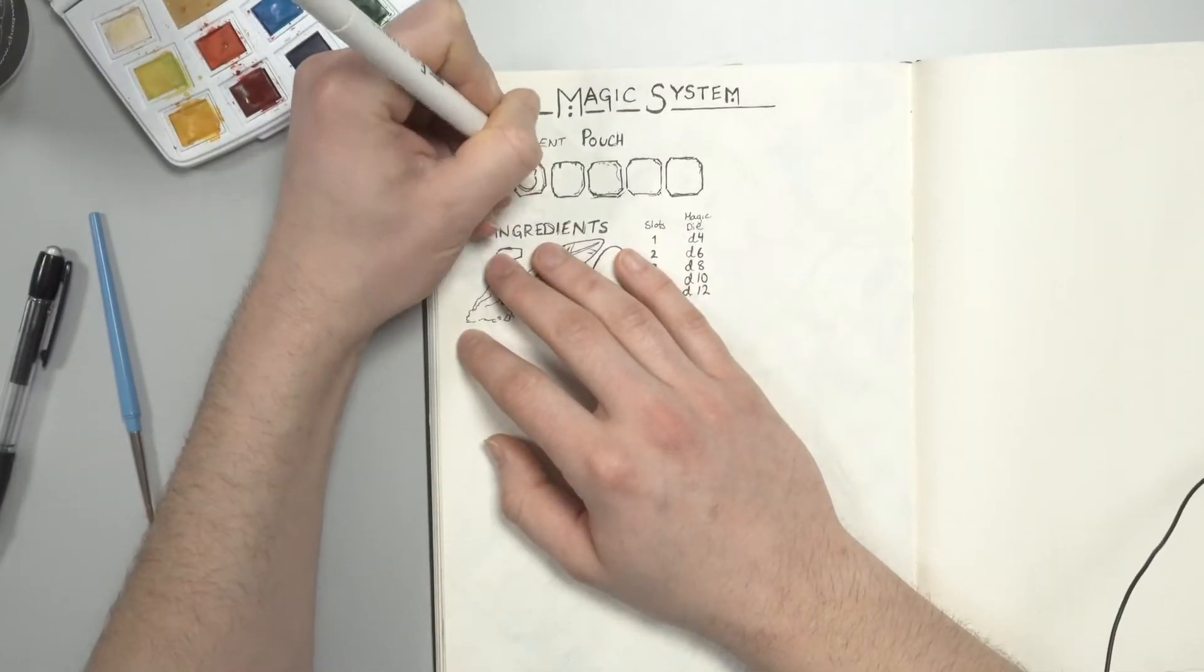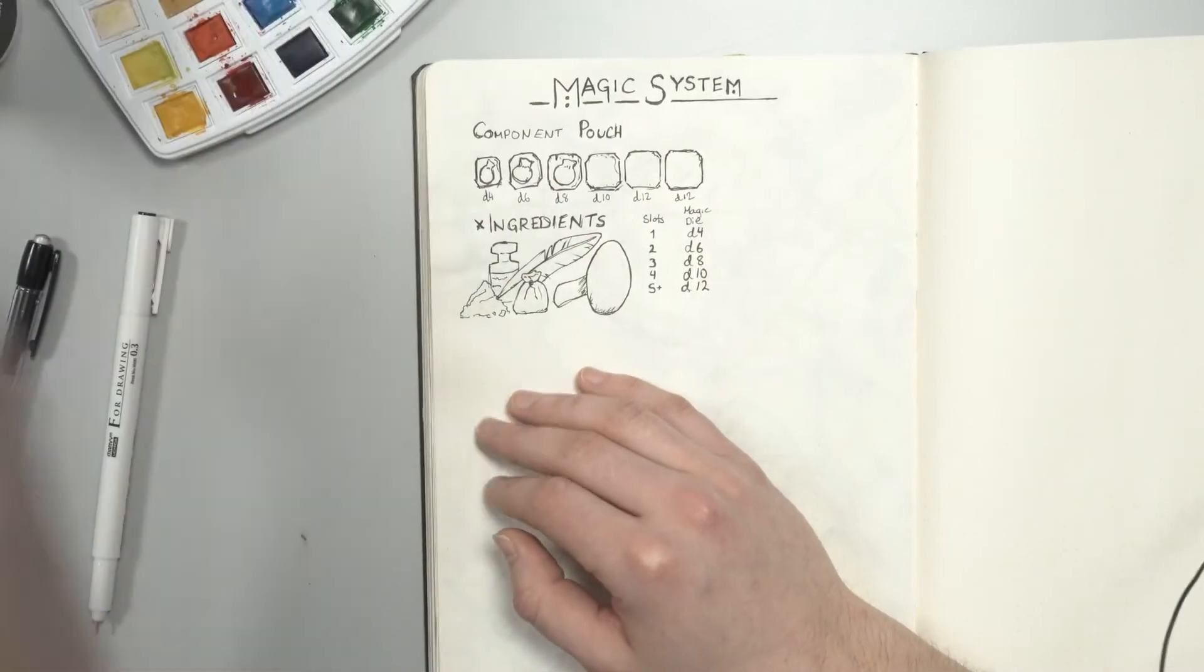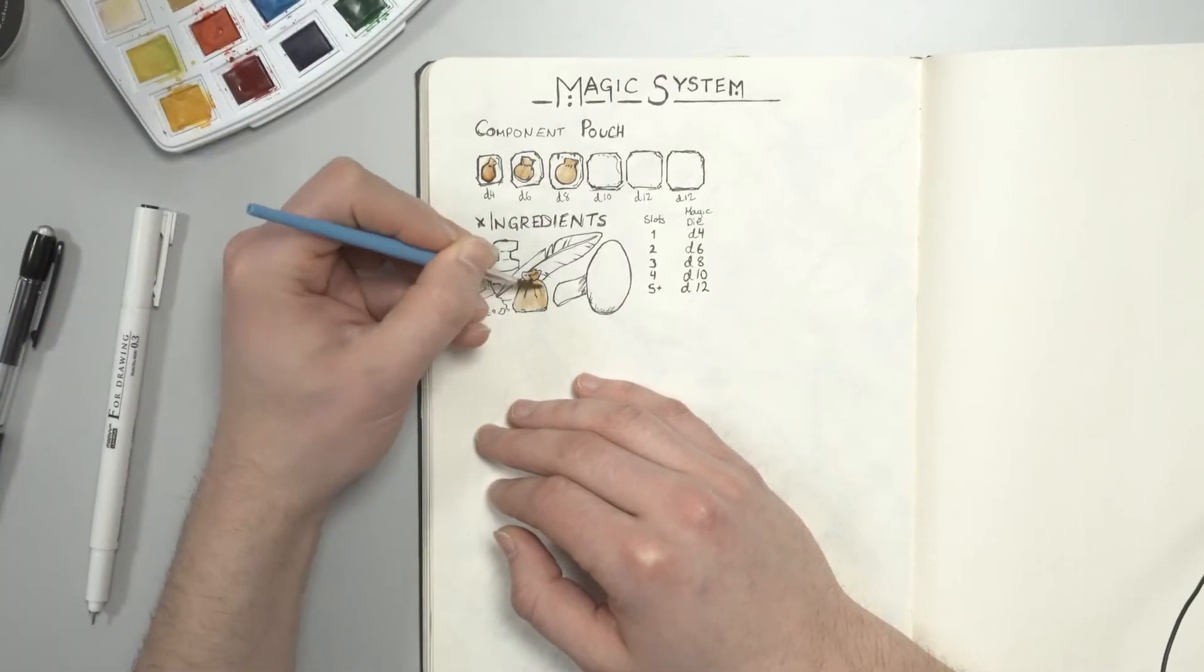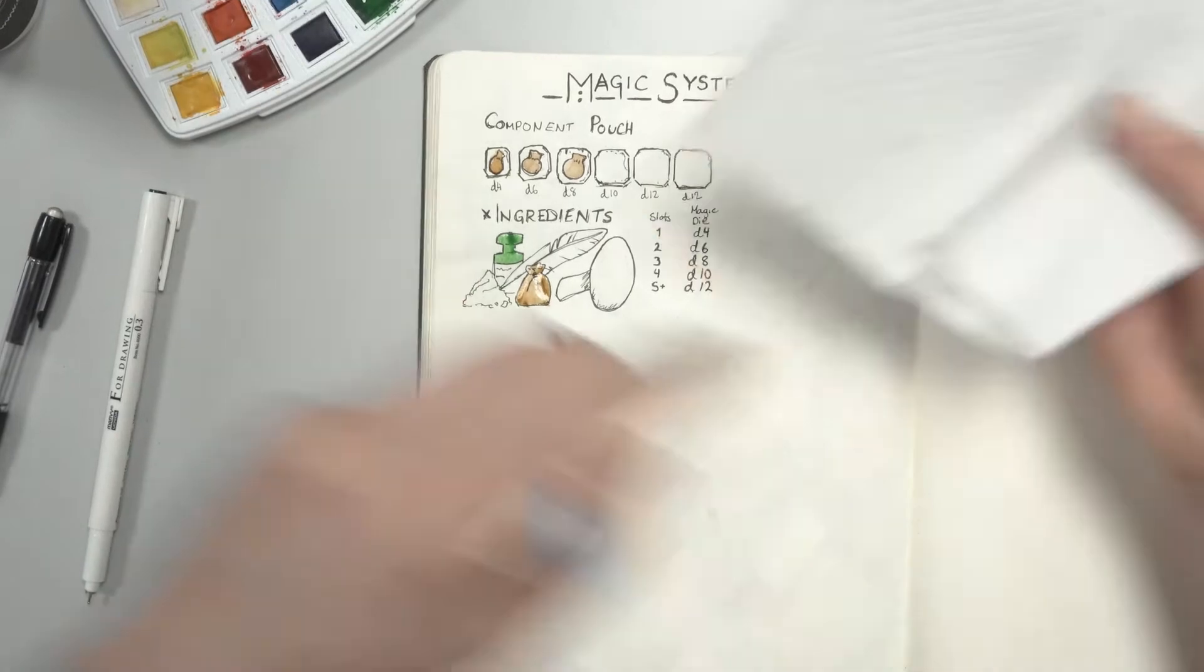I must admit that I think this system is brilliant in many ways. Firstly, when you fail a roll and therefore lose an ingredient, you get a lower magic die.